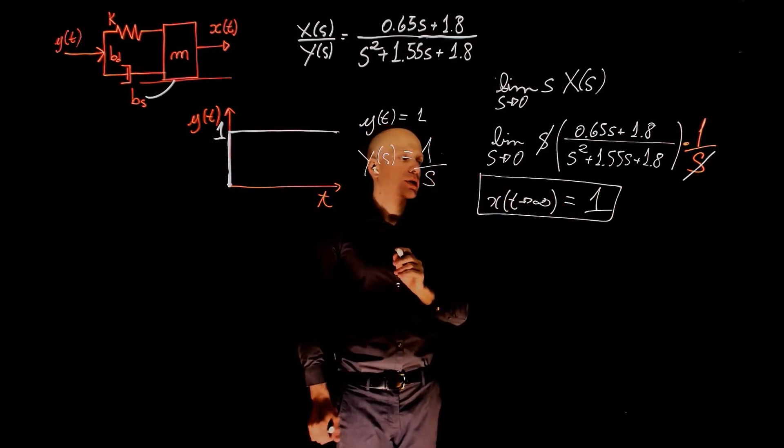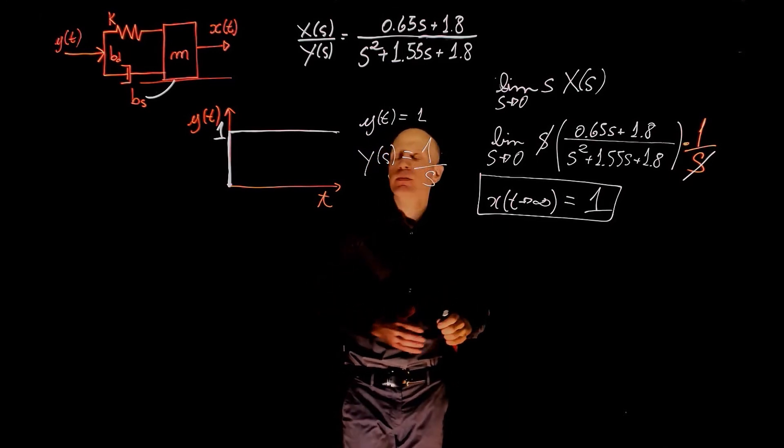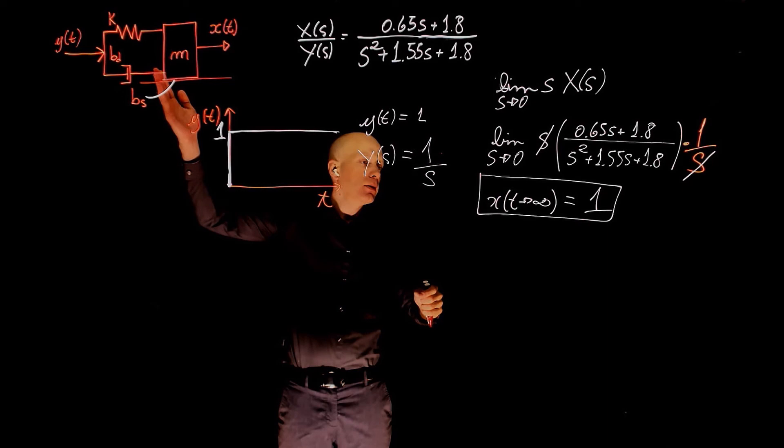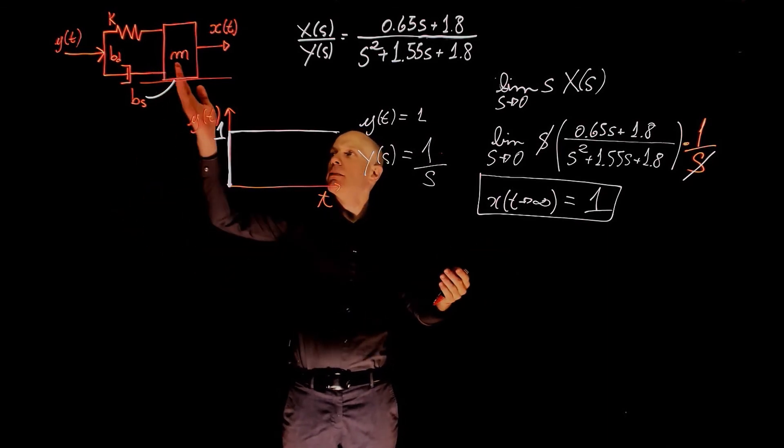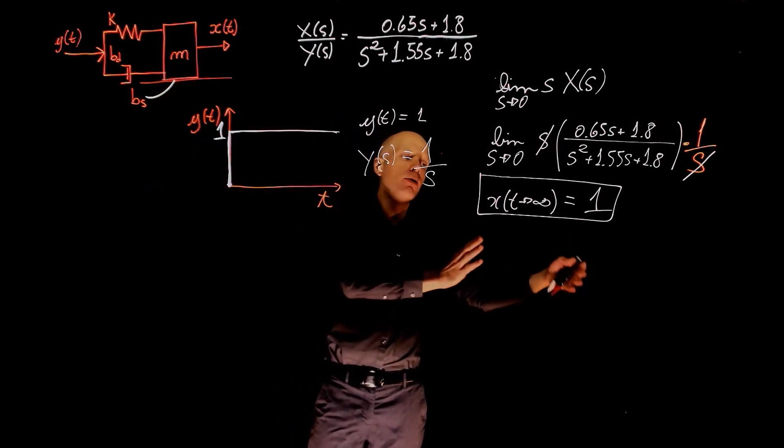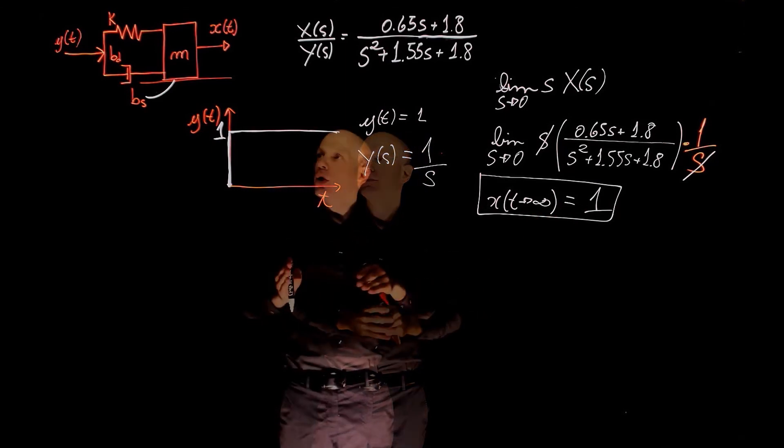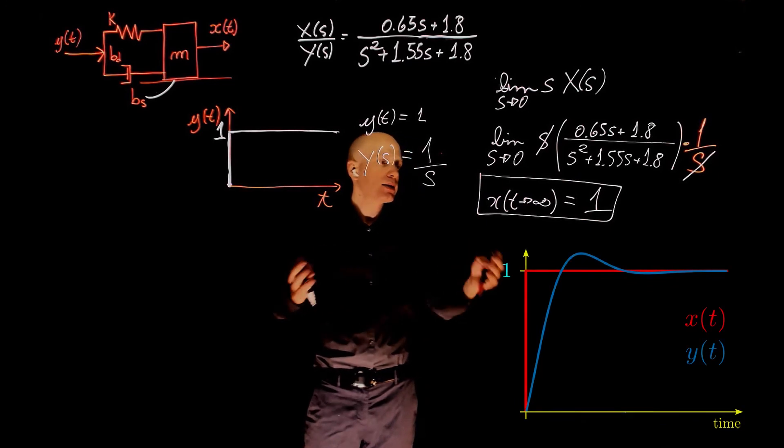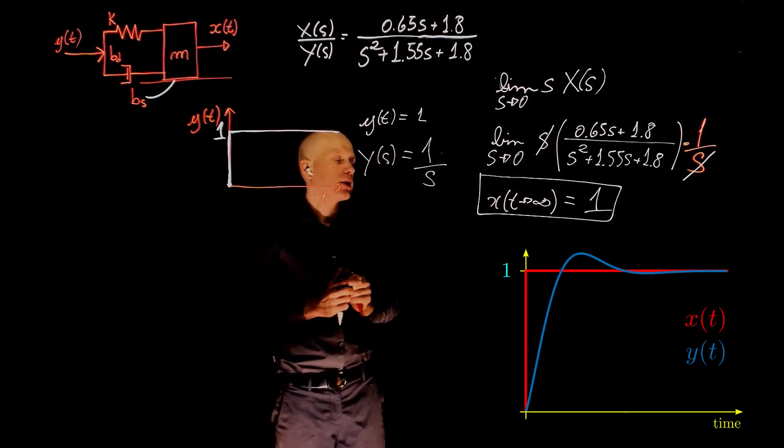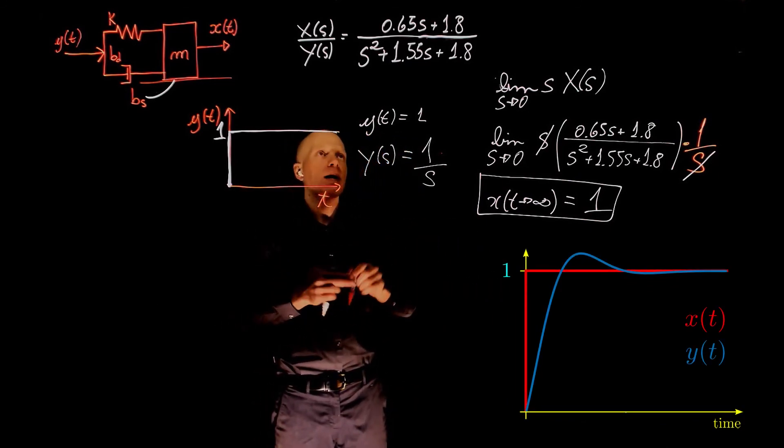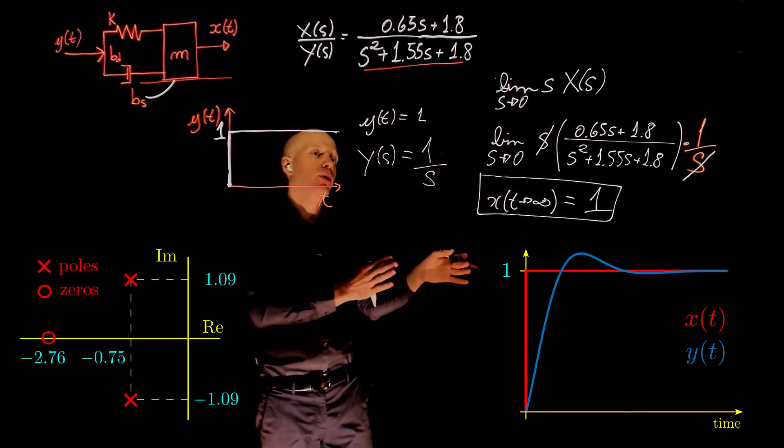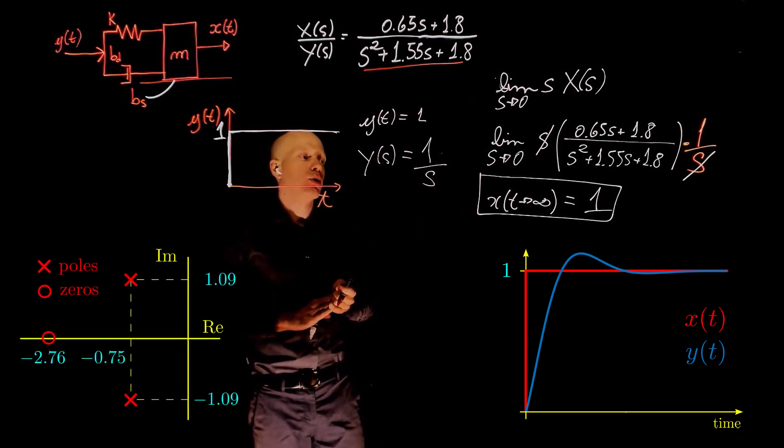This is a very interesting result and very intuitive at the same time. This tells us that if we move the spring on this side by 1 mm or 1 unit, the mass will eventually also move by the same amount, by 1. To go from 0 to 1, now the mass will follow a step response. And that step response will have sinusoidal and exponential components. Again, because if you look at the poles of our transfer function, they have both imaginary and exponential components.